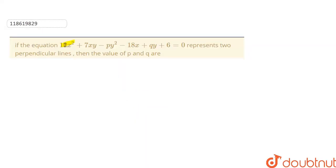In this question, 12x² plus 7xy minus py² minus 18x plus qy plus 6 equals 0 represents two perpendicular lines. Then the value of p and q are: